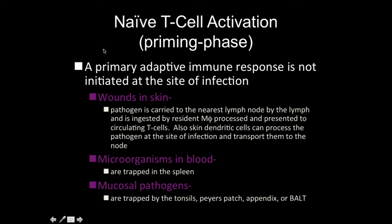The primary adaptive immune response is not initiated at the site of infection — this is a common misconception that a lot of people have. What we usually will have is some type of a breach in one of our lines of defense, the first or second, and then the pathogen will be carried to the nearest lymph node by the lymph and is going to be ingested by the resident macrophages, processed, and presented to the T-cells. All of this is usually happening at some type of secondary lymphoid organ.